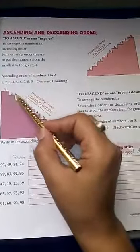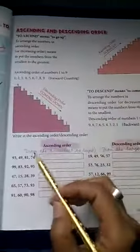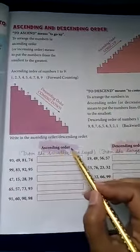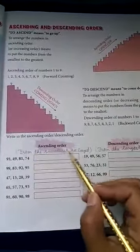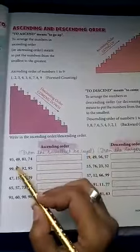For example, 9, 8, 7, 6, 5, and so on. Next, ascending order from the smallest to largest. Which is the smallest?